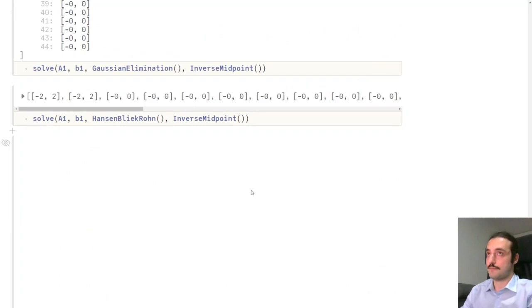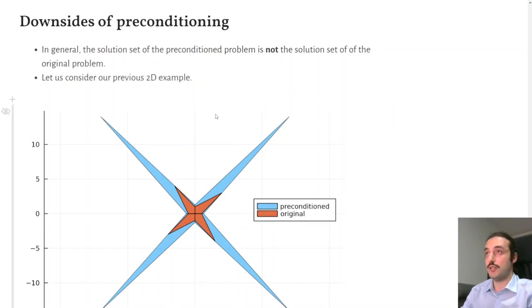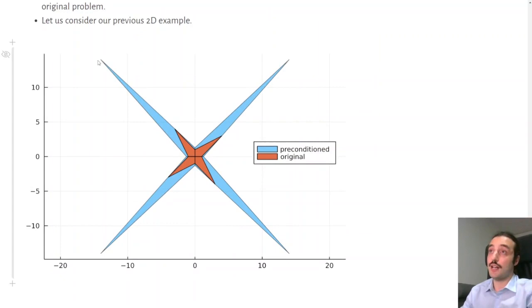However, there's a surprise to pay. When we precondition the interval linear system, we are actually changing the problem that we are solving, which means that the solution set of the preconditioned problem will not necessarily be the same as the solution set of the original problem. Indeed, if we precondition the problem, we may enlarge the solution set, as it's demonstrated here. This is our original 2D star. Now, we solve with Oettli-Prager the preconditioned problem, and we see that we get this bigger star.